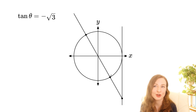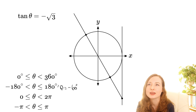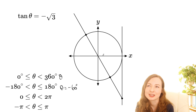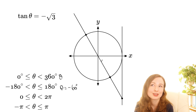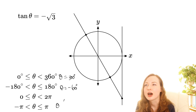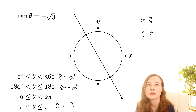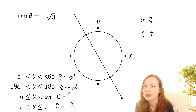Where that line cuts the unit circle gives the two angles we're looking for. The first one looks like 60 degrees, so we could call that negative 60 if we're in the negative 180 to 180 range. If we're in the 0 to 360 range, add 360 to get 300 degrees — you can think of it as 360 minus 60, or even 270 plus 30. If we're working in radians, 60 is pi on 3, so we could say negative pi on 3, or in the 0 to 2 pi range think of it as 2 pi minus pi on 3, which is 6 on 3 minus 1 on 3, making 5 pi on 3.